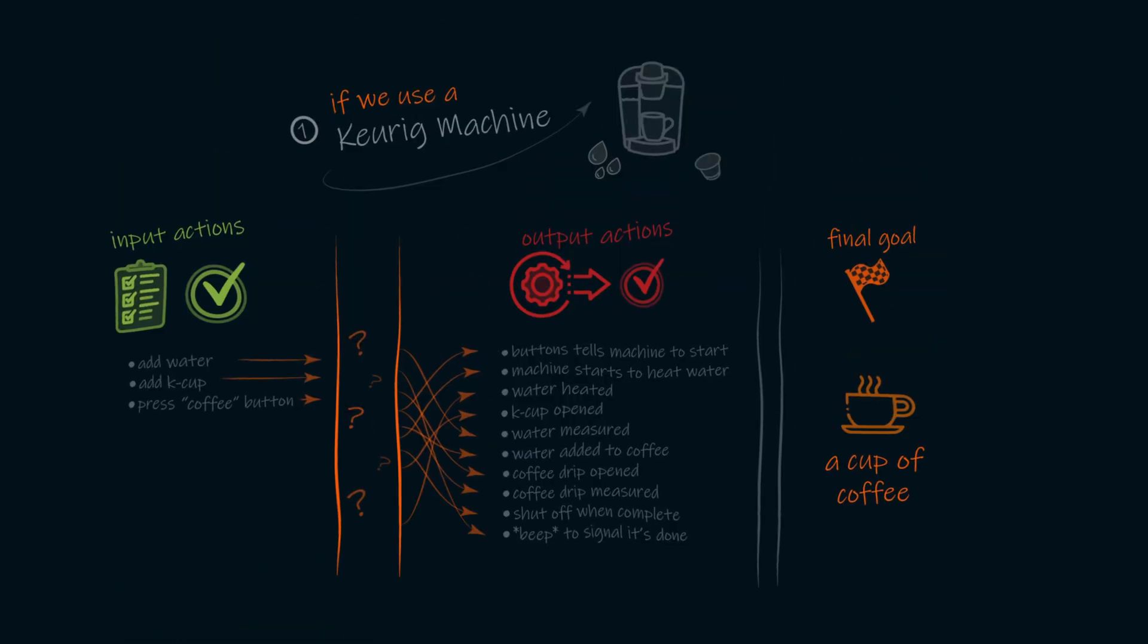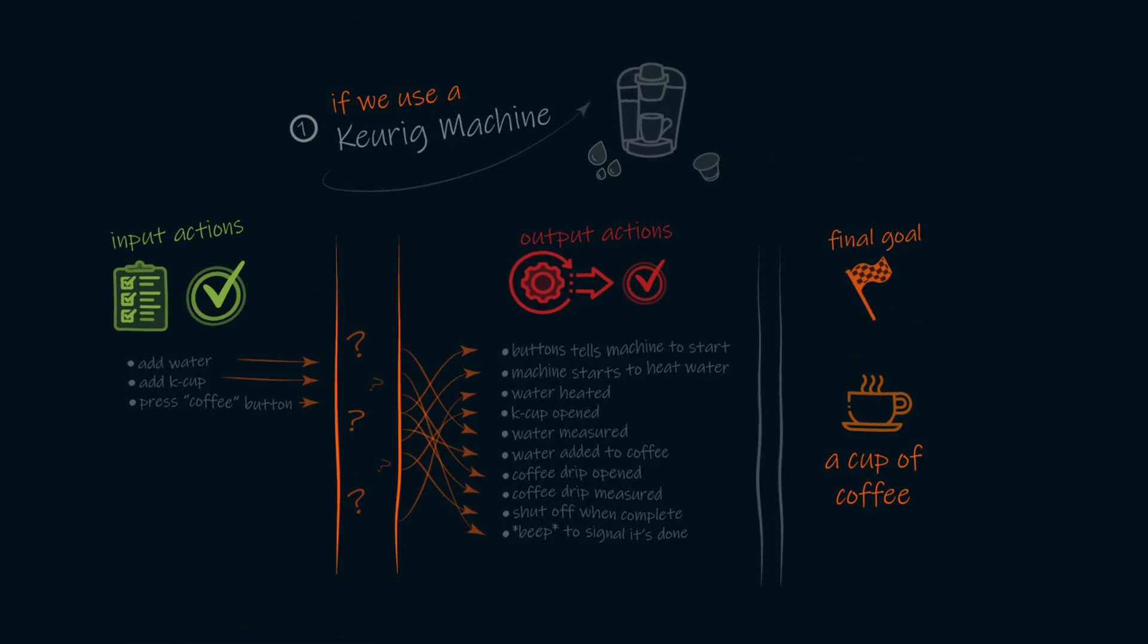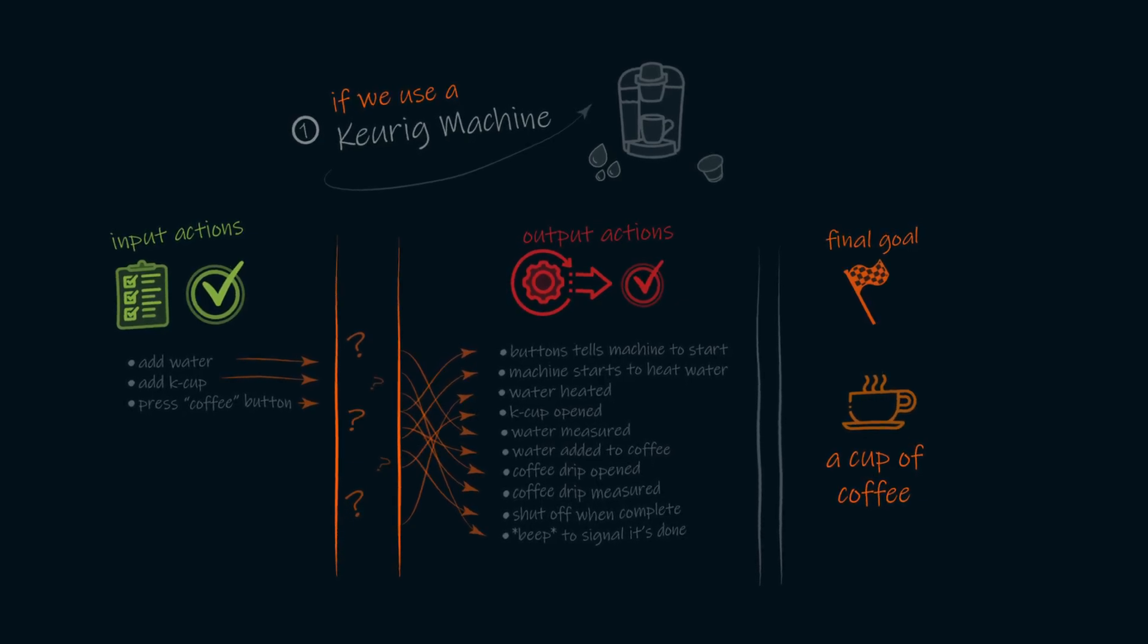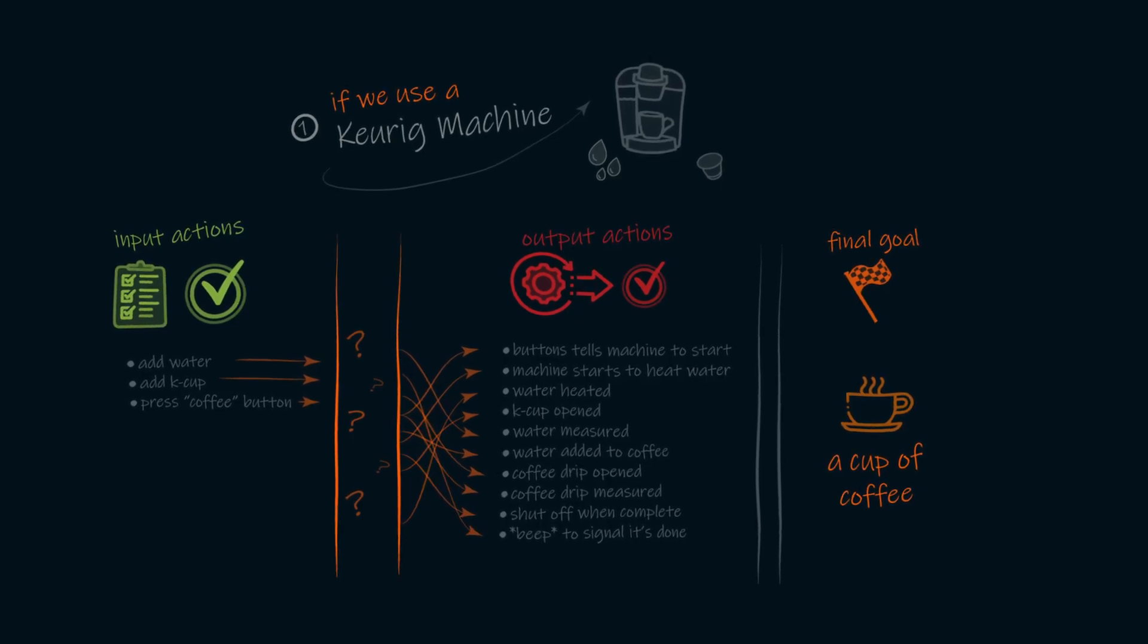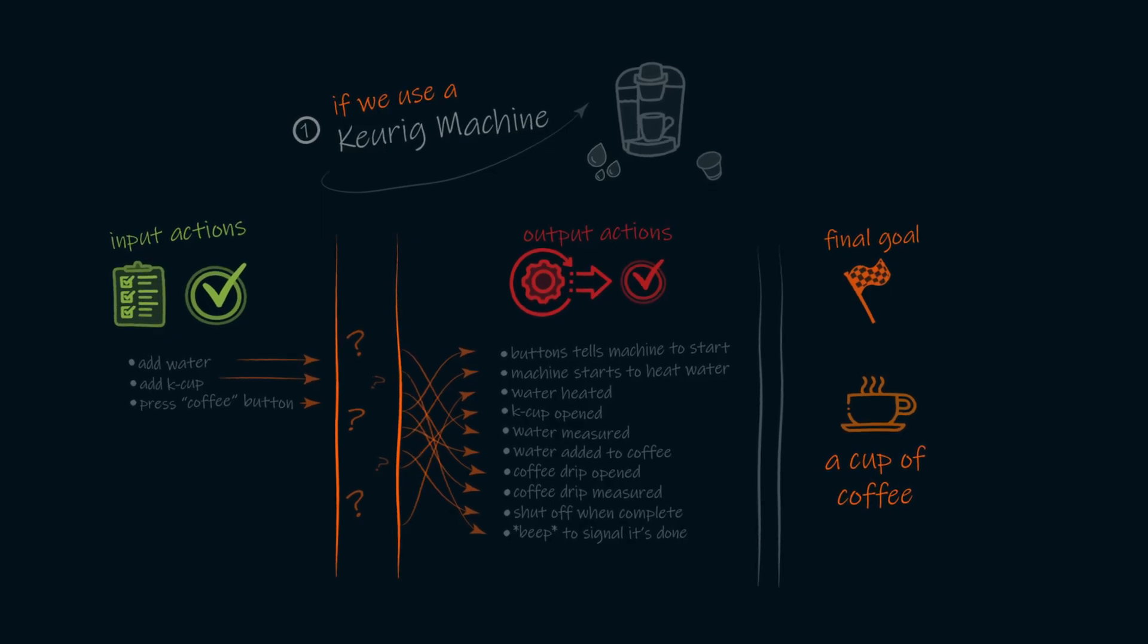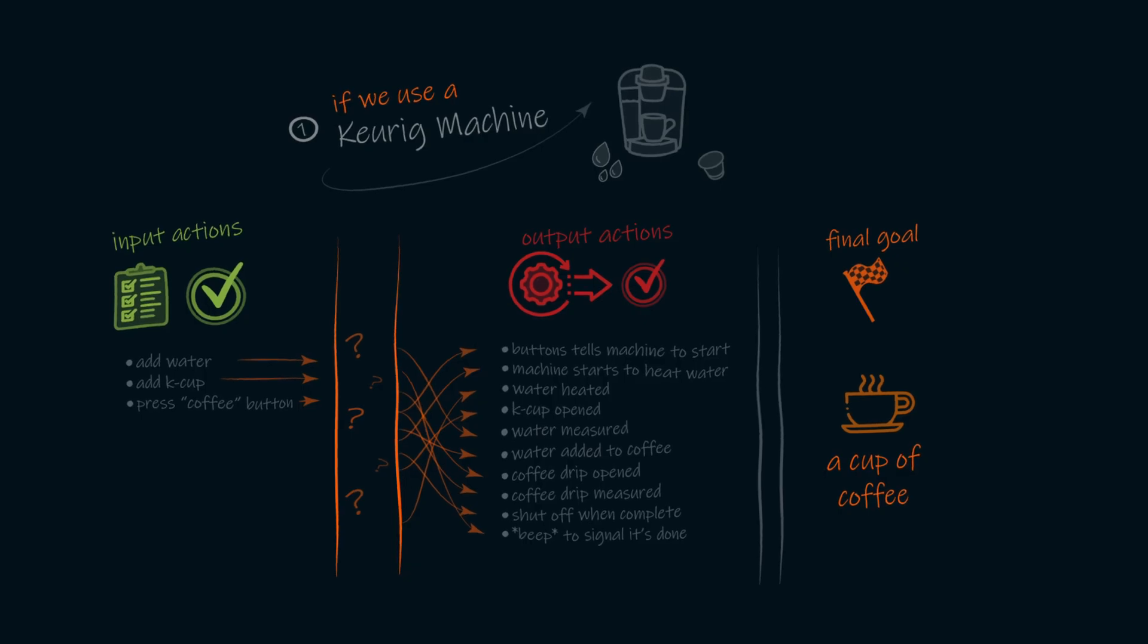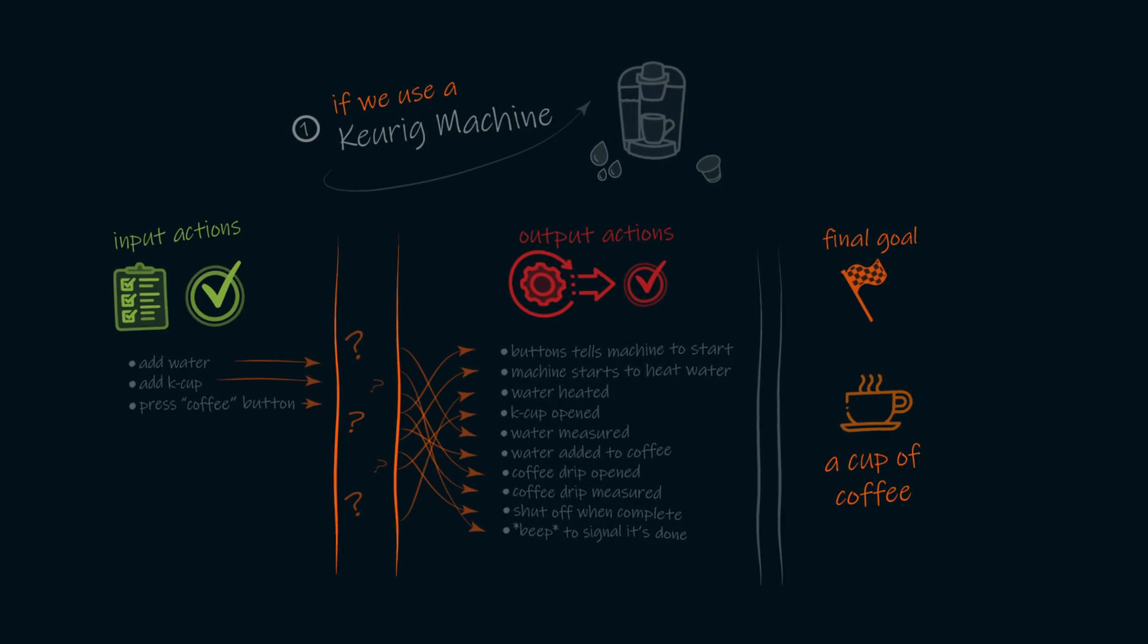Now, to make the coffee with the Keurig, we'll need to do three steps. And we can think of these three steps, or three actions, or three input buttons that we might be pressing. And that would be one, add water, two, add the K-cup, and three, press the coffee button. That's all.